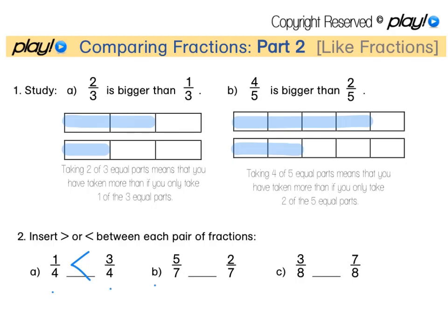1 quarter is less than 3 quarters. For B, 5 sevenths is greater than 2 sevenths. For C, 3 eighths is less than 7 eighths.